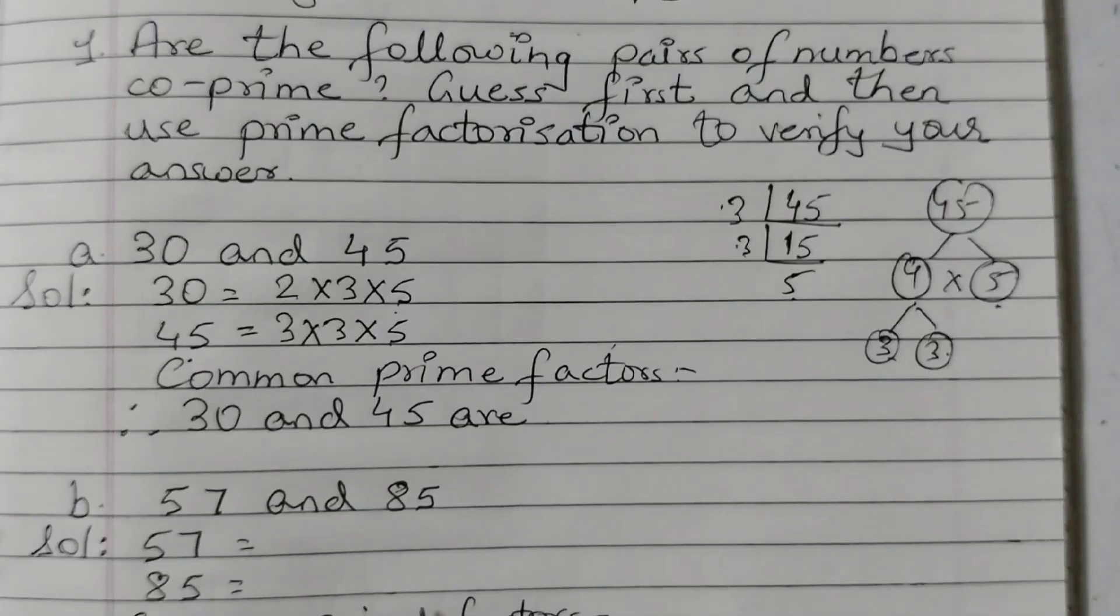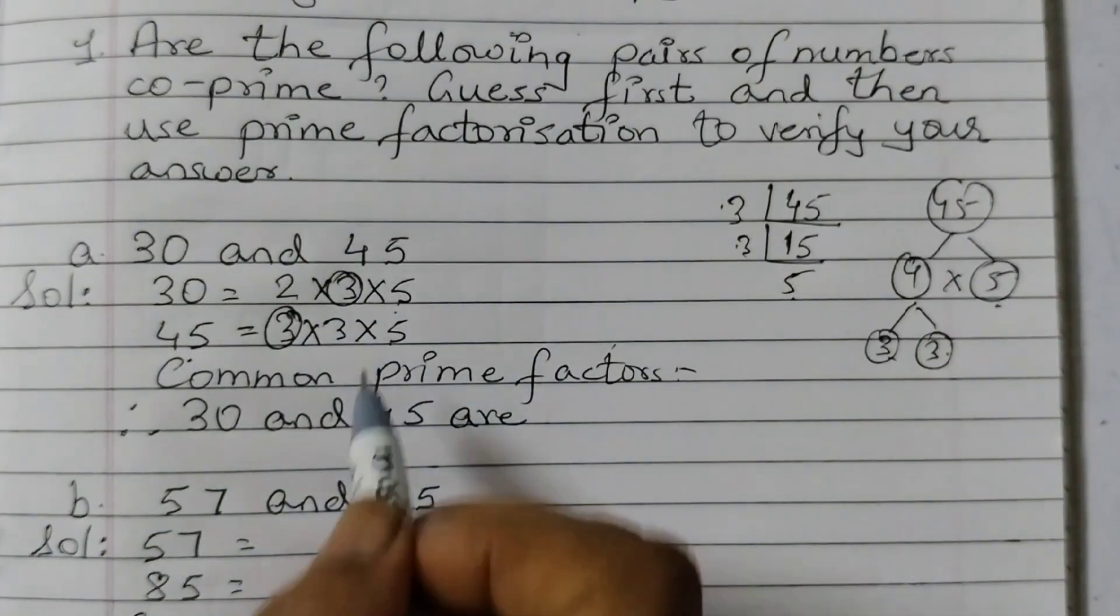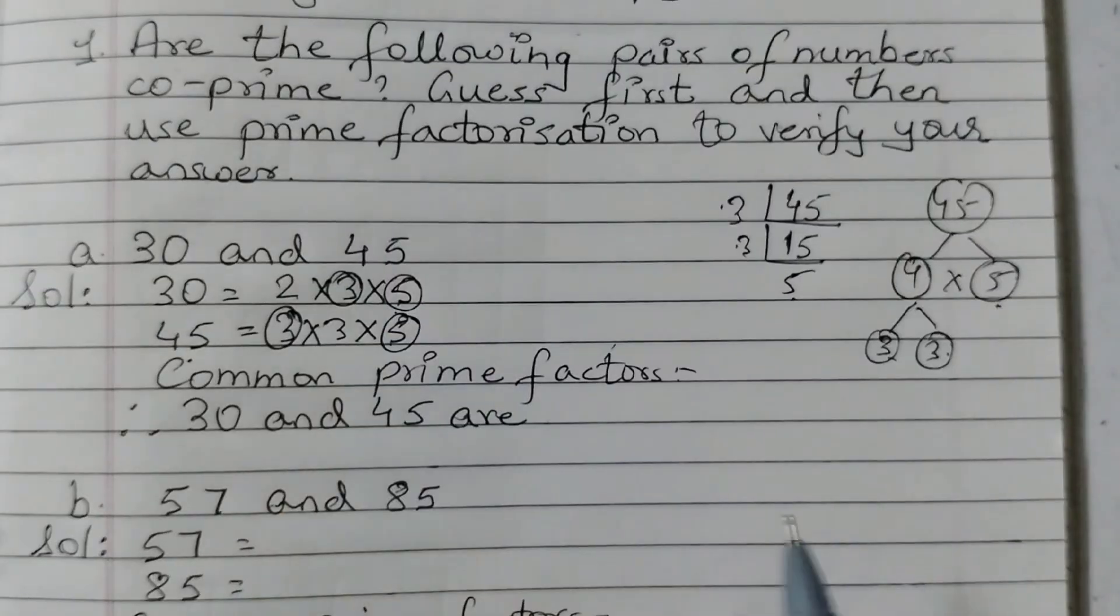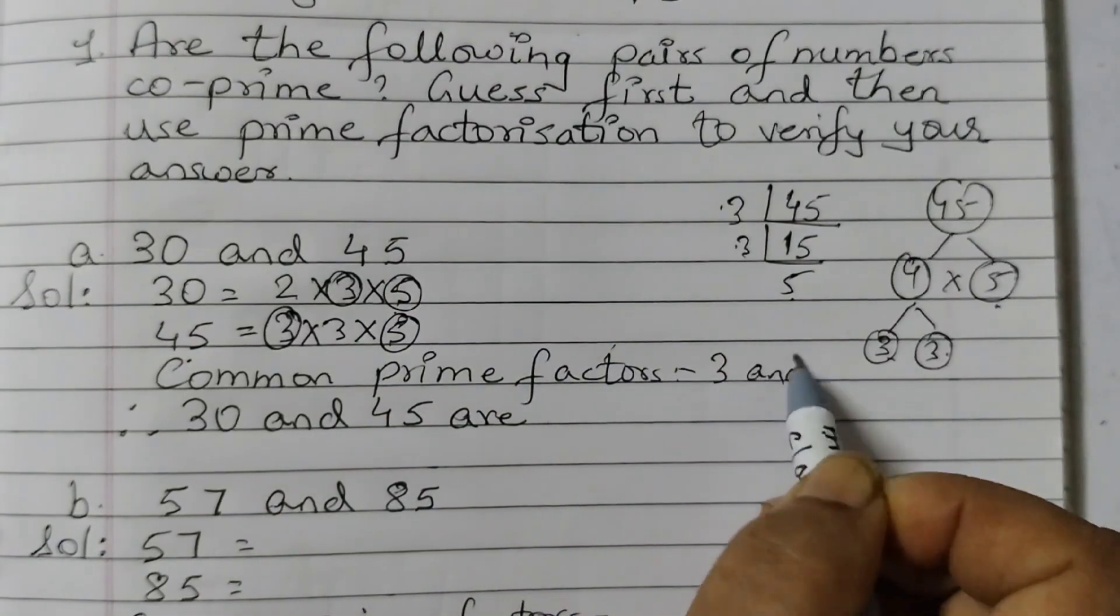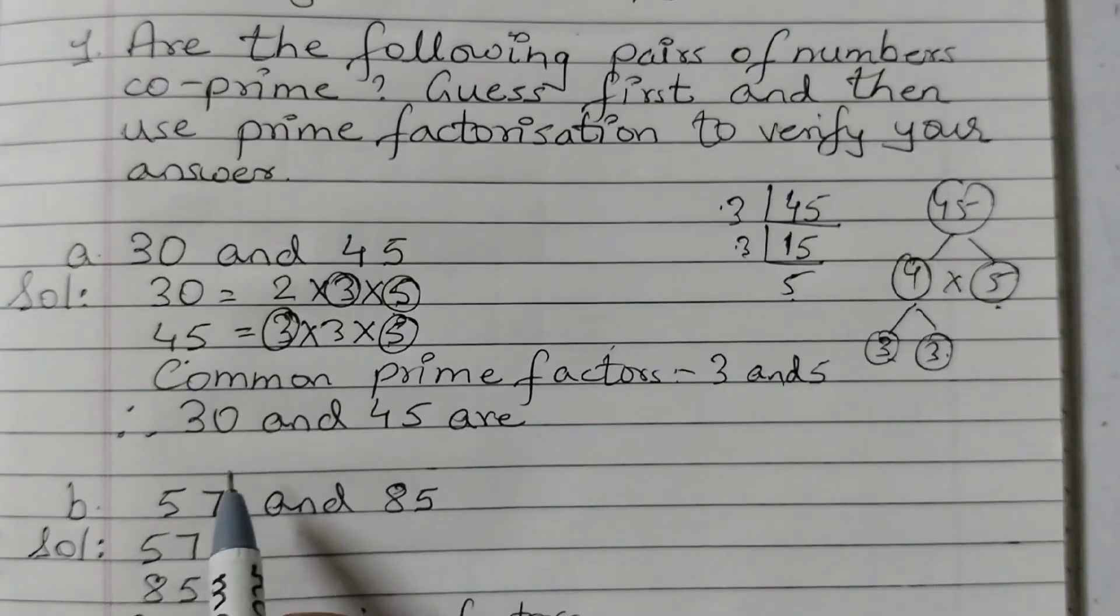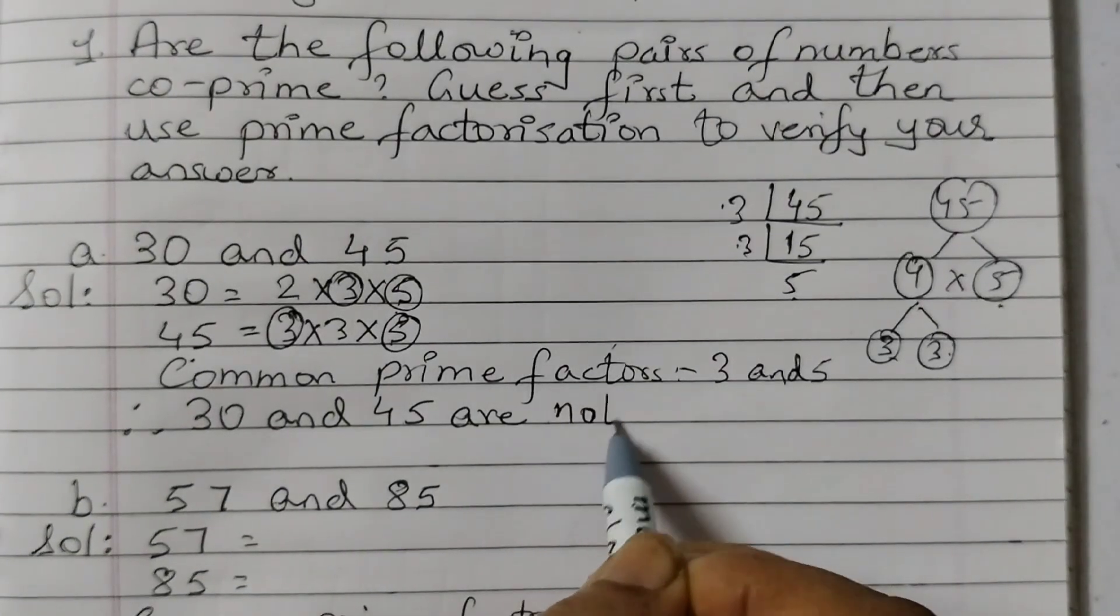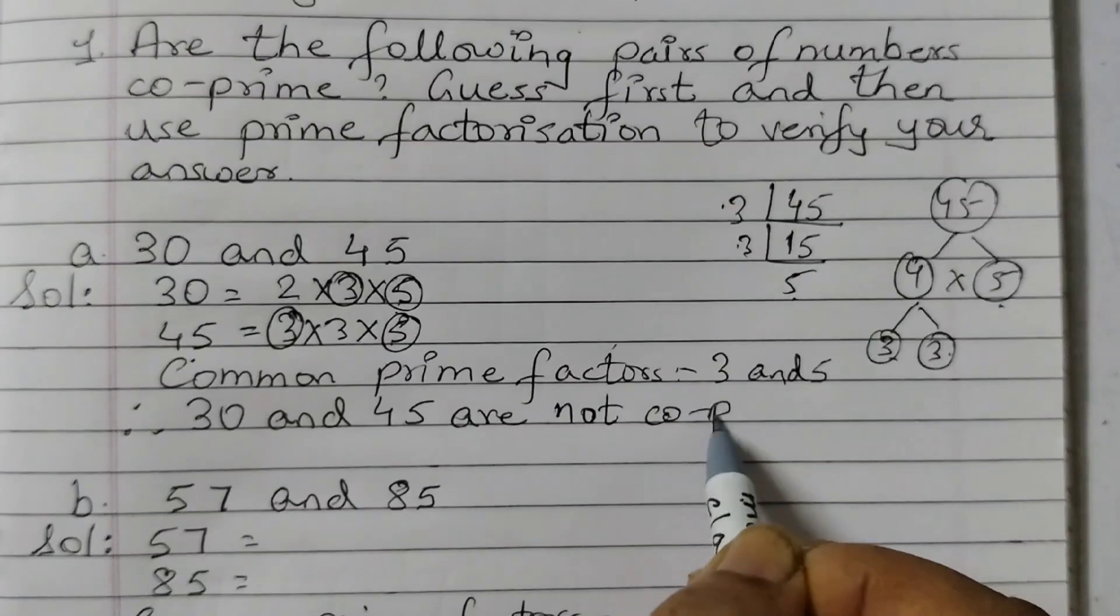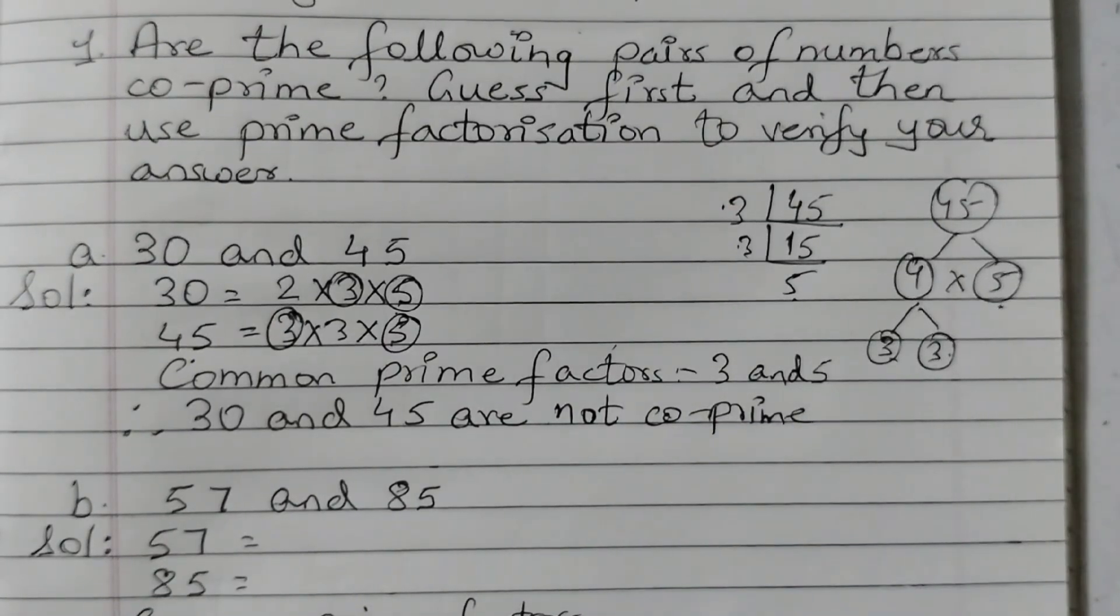Now we will check is there any common prime factors. 3 is a common prime factor. 5 is a common prime factor. So common prime factors are 3 and 5, which means 30 and 45 are not co-prime because we have common prime factors. So they are not co-prime.